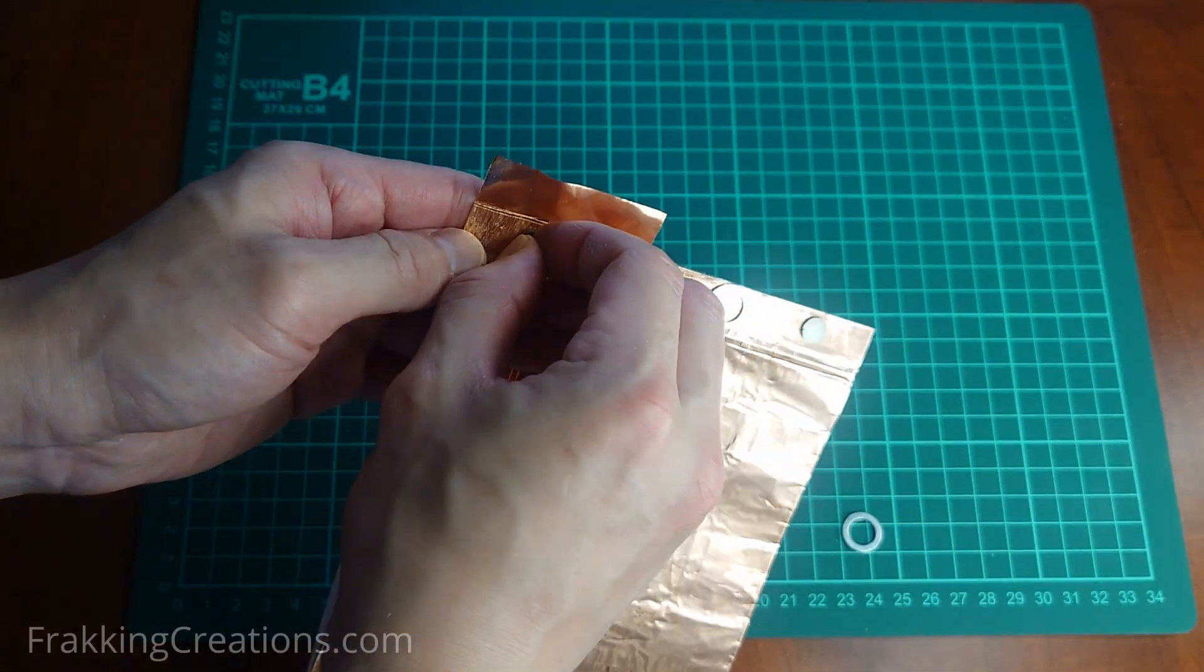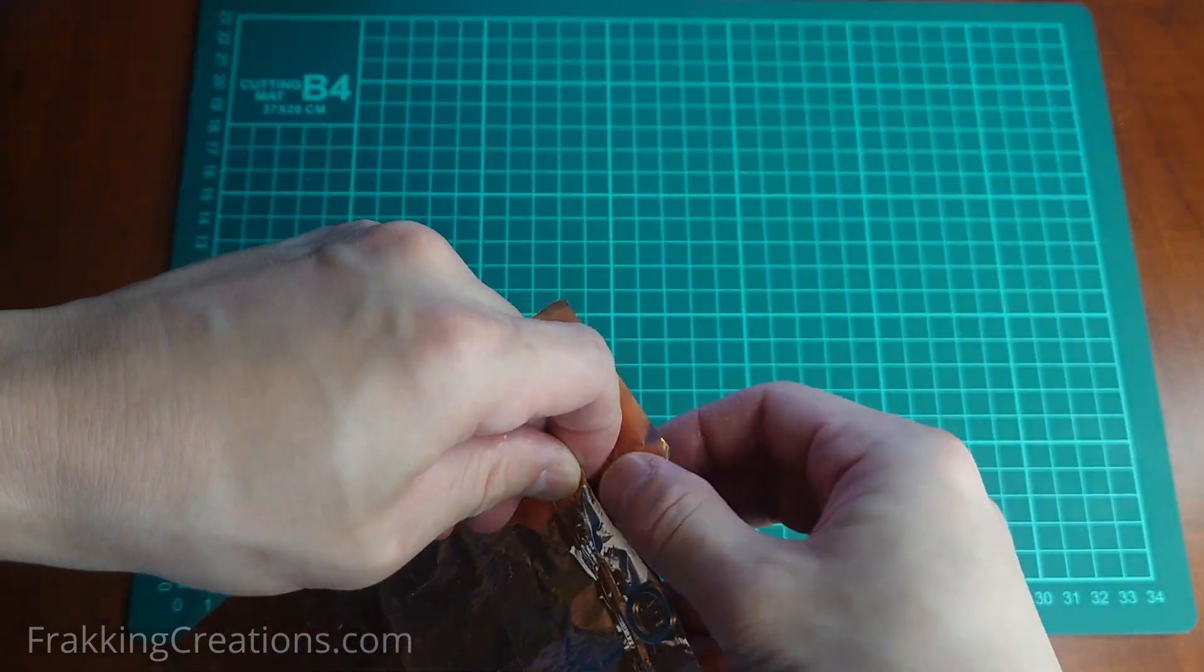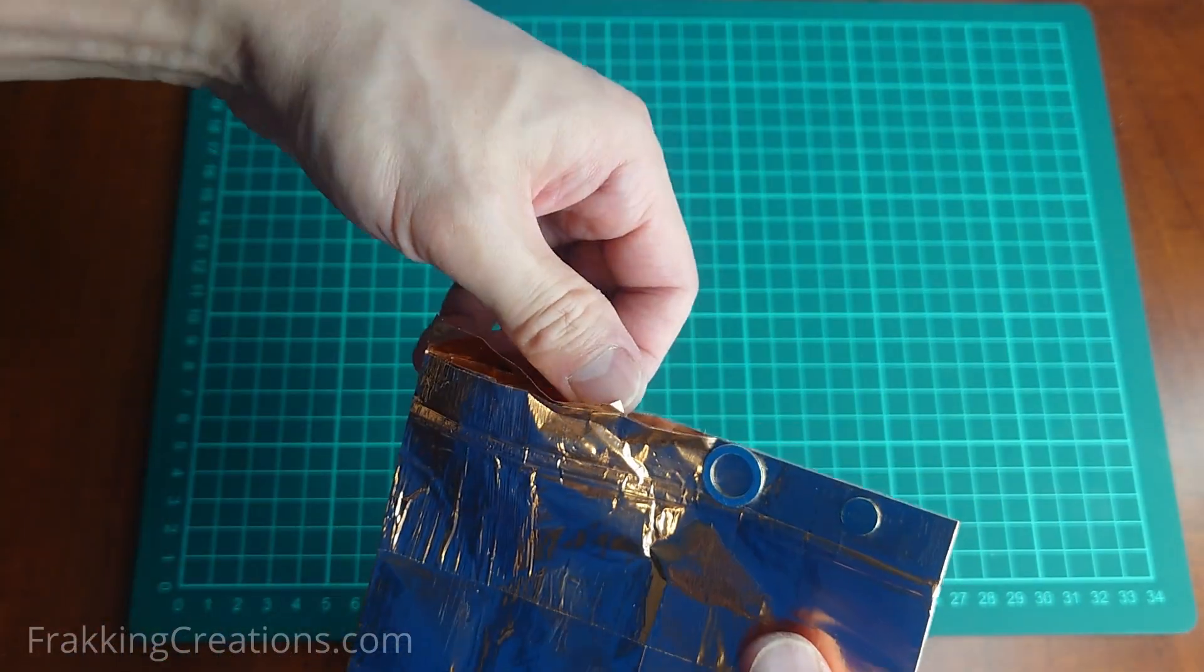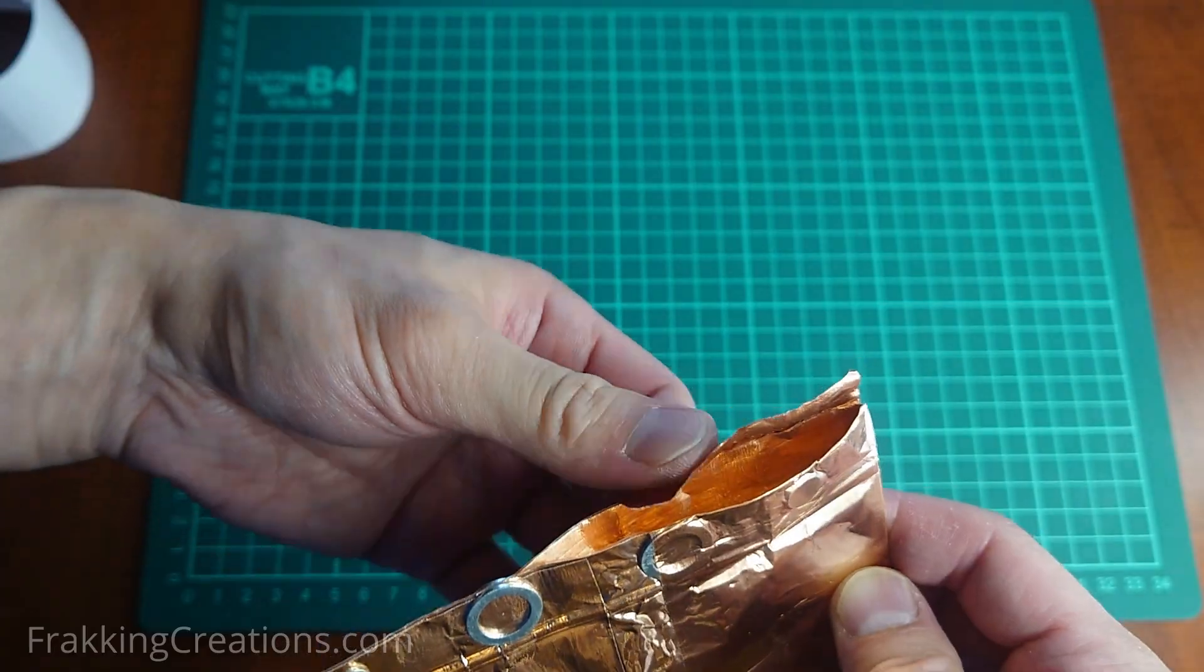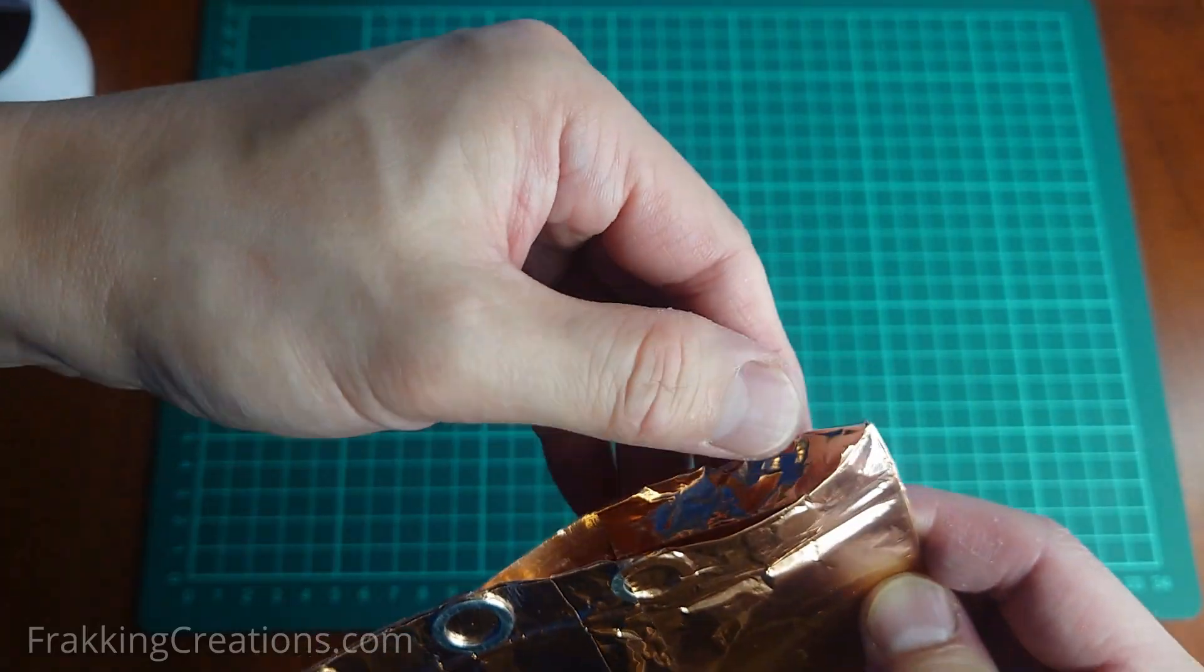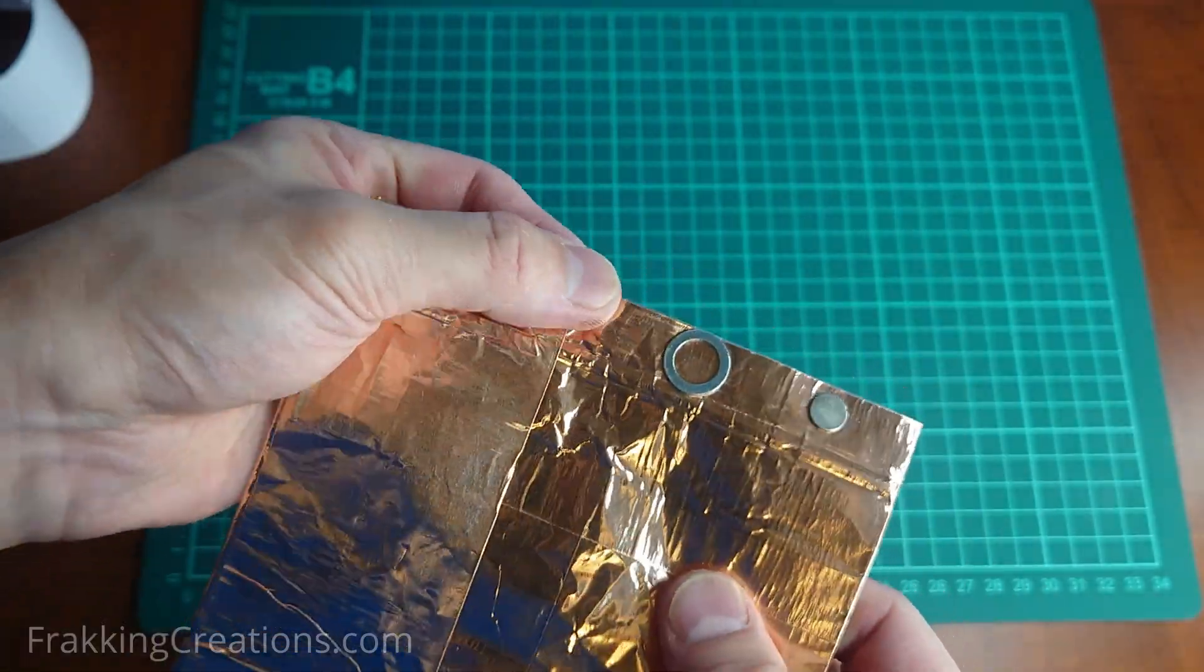After taping one side, remove the matching magnet on the opposite side temporarily so that you can open the lip and wrap the tape around. Then replace the magnets and finish taping the first vertical layer. Make sure the tape is taped as flat as possible to ensure proper sealing when closed.